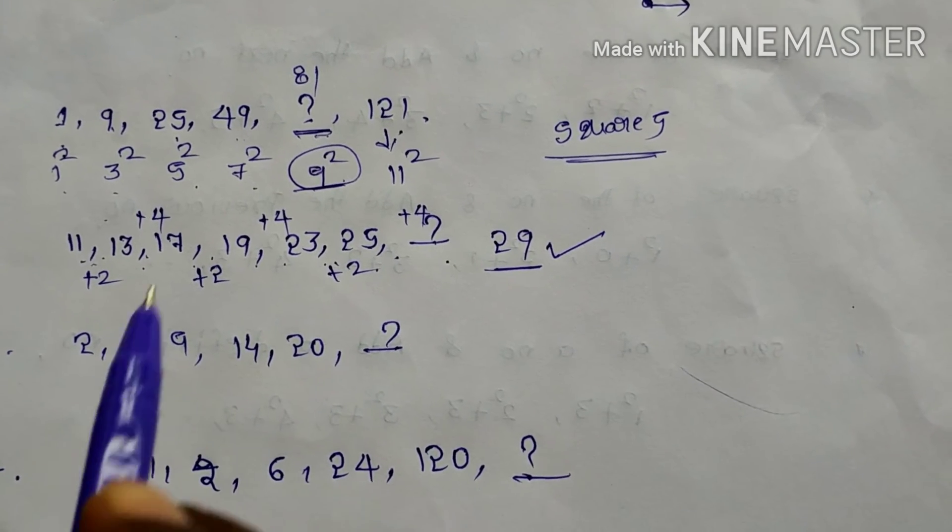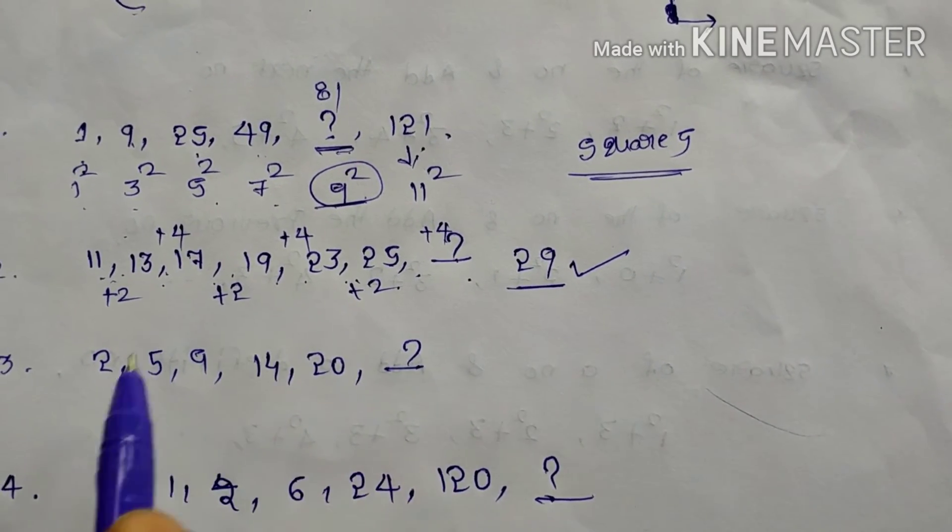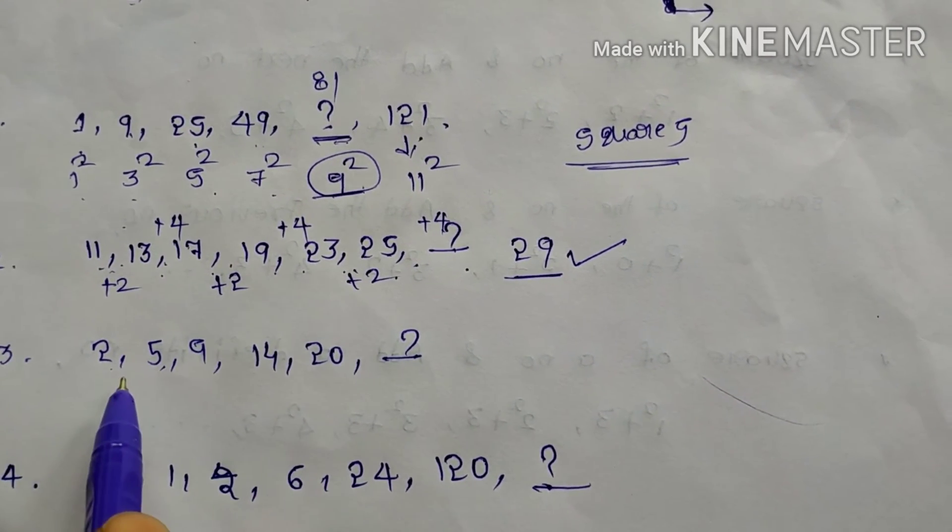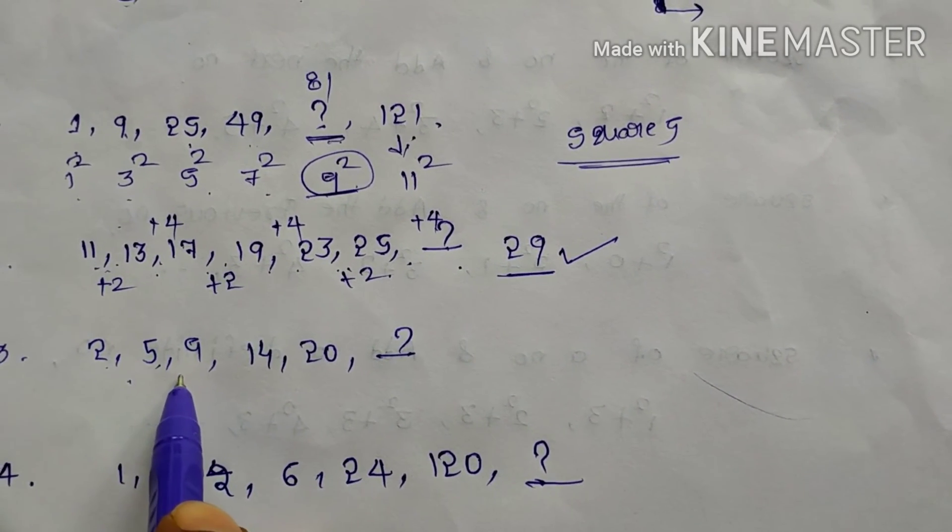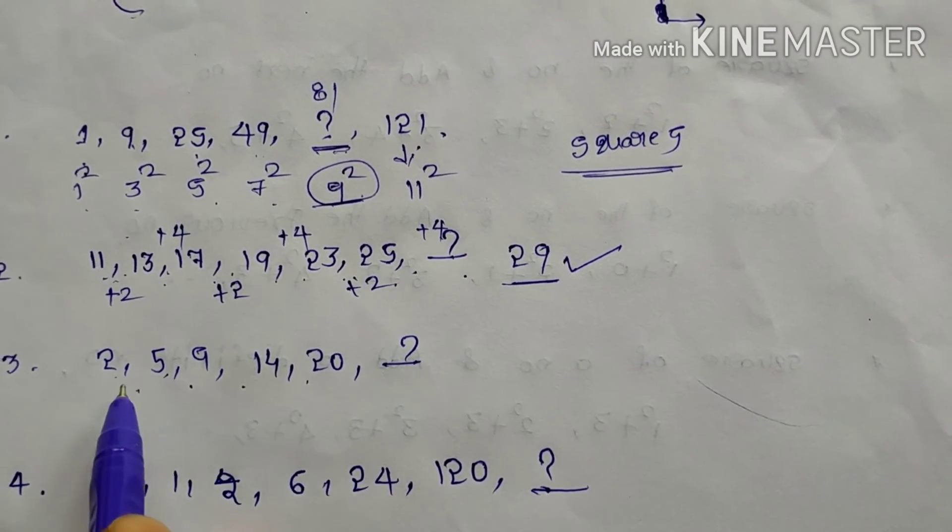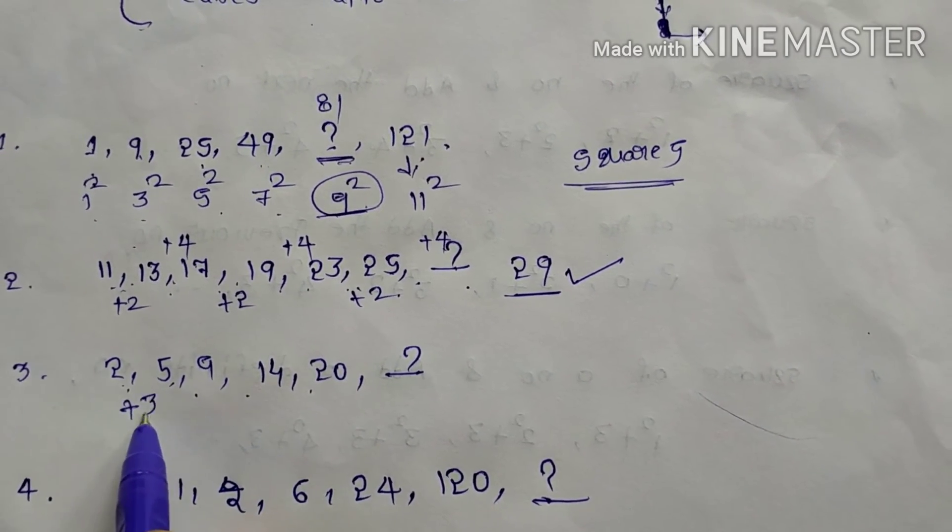Just it observed as plus 2, plus 4. Now you can see third one. 2, 5, 9, 14, 20. Just you can observe here.